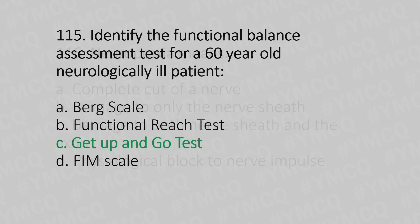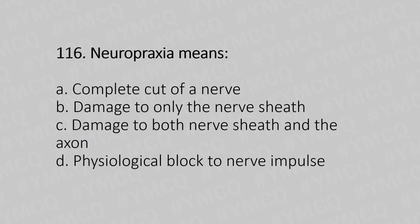Now let's move to question number 116. Neuropraxia means: Option A, complete cut of the nerve. Option B, damage to only the nerve sheath. Option C, damage to both nerve sheath and the axon. Option D, physiological block to the nerve impulse. And the answer is Option B, damage to only the nerve sheath.